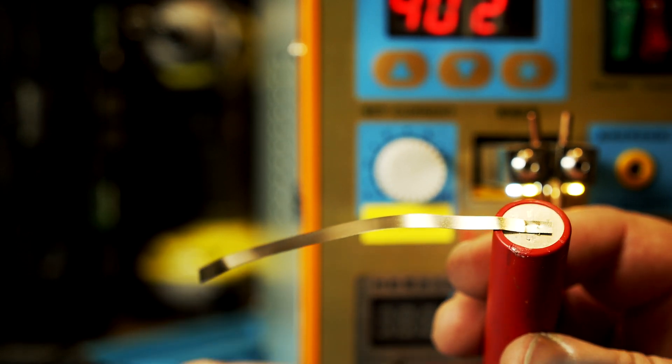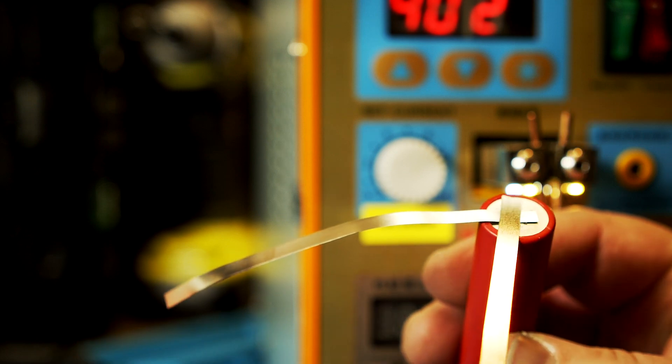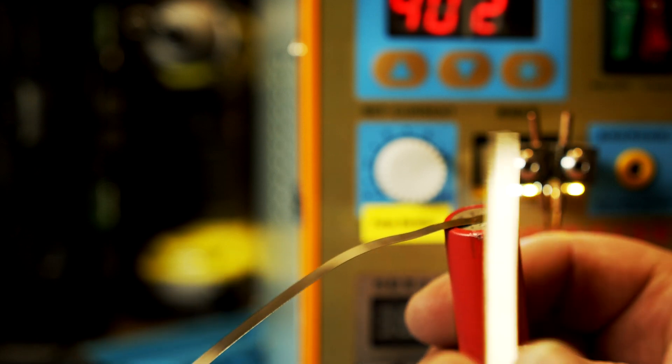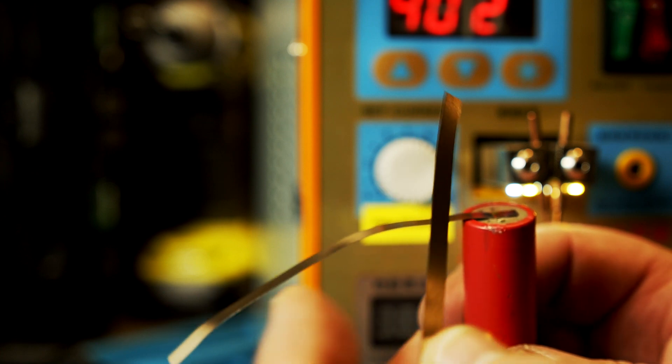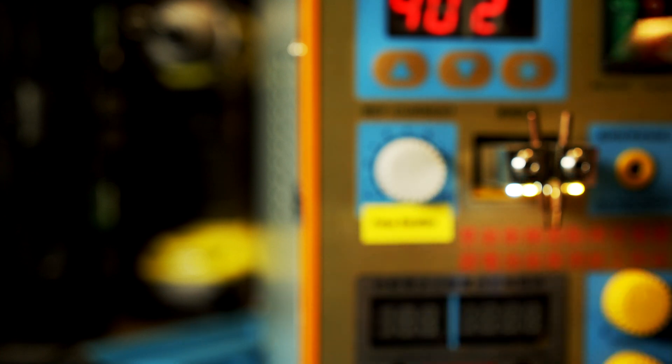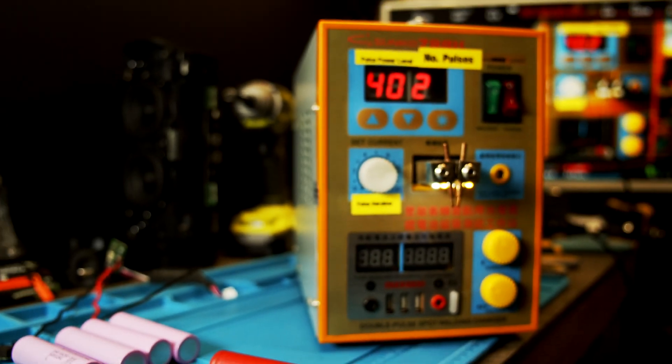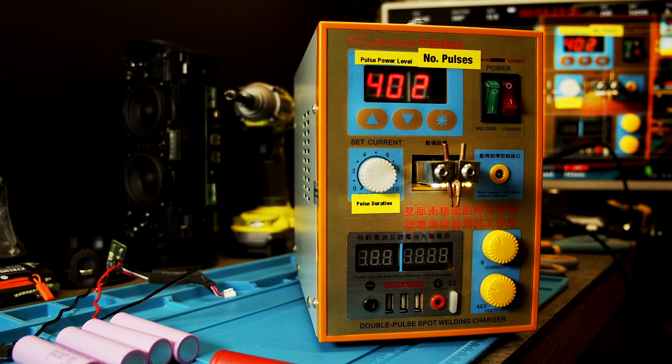If I want the thicker one across here, I need more power, because this is the thickness of the metal, so I need to set the settings again.